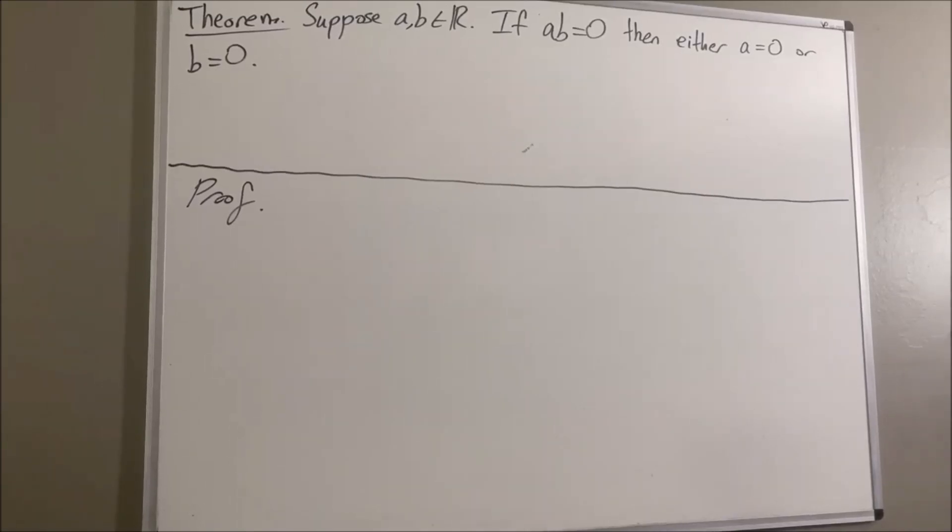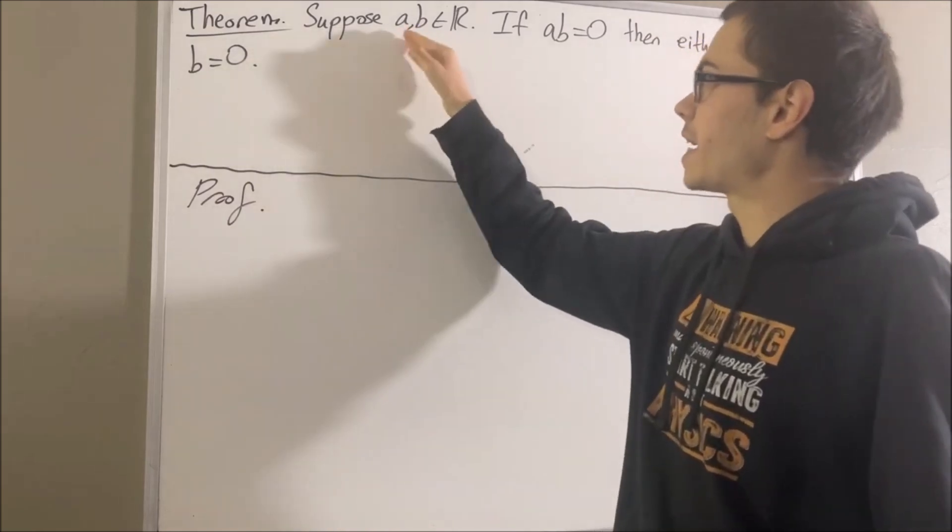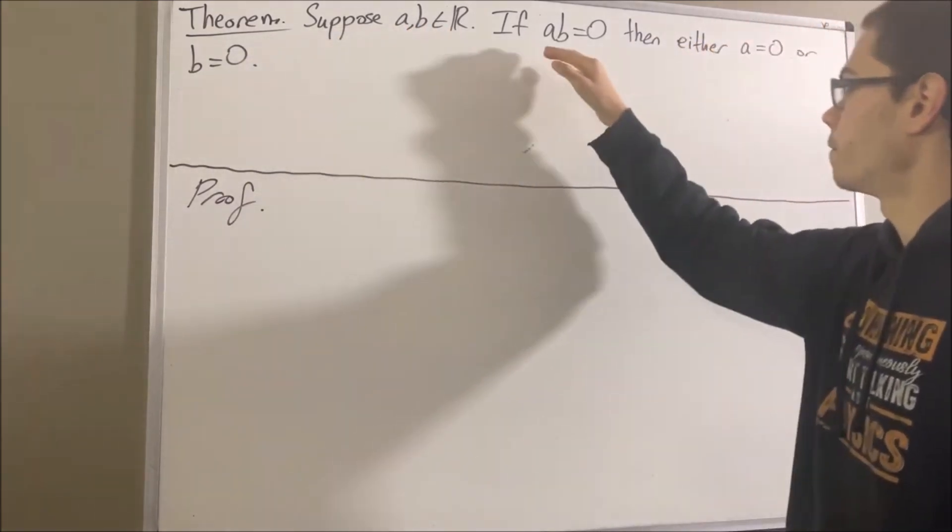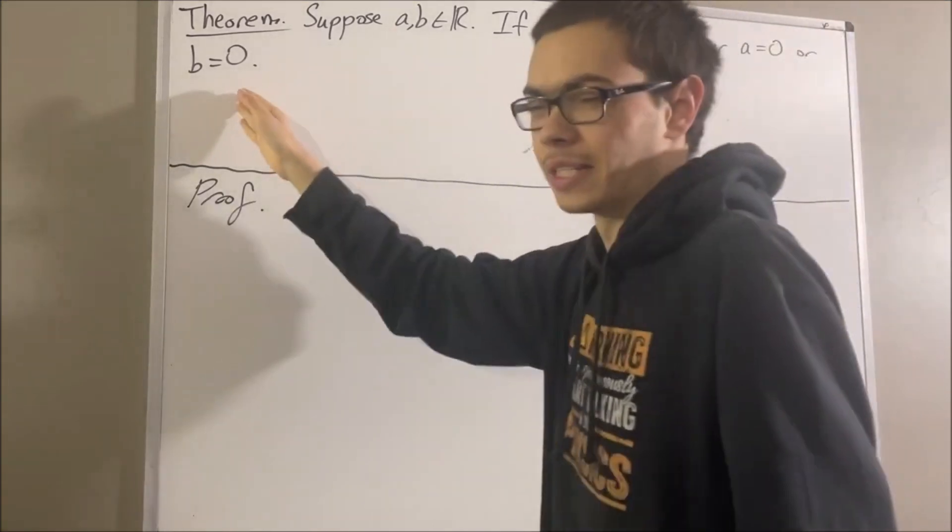Hello! In this video, we are going to prove the following theorem. Suppose A and B are real numbers. If AB is equal to 0, then either A is equal to 0 or B is equal to 0.